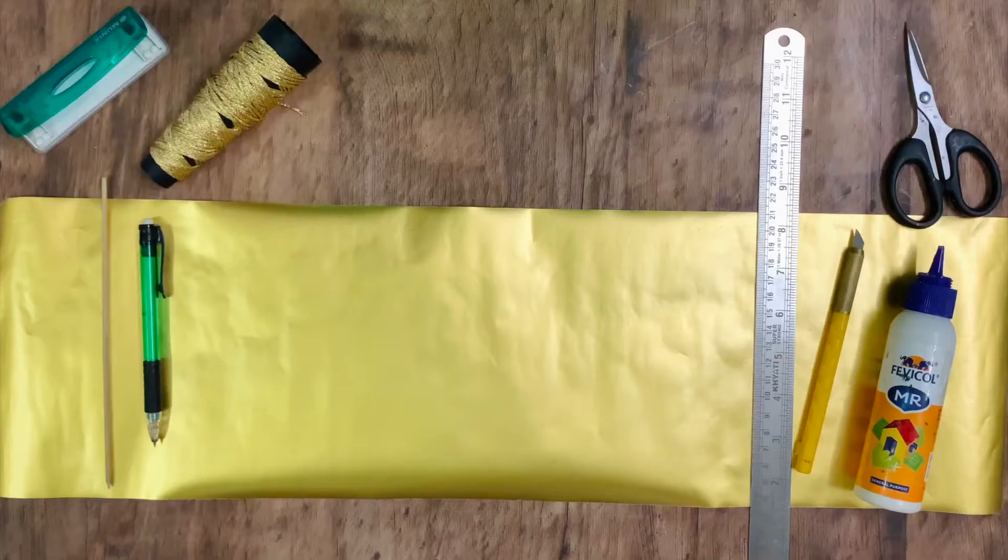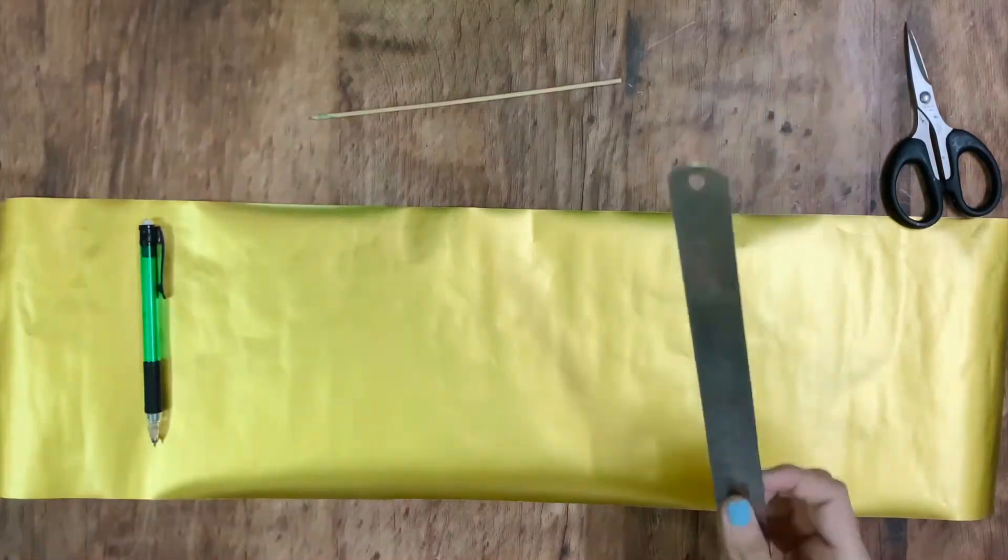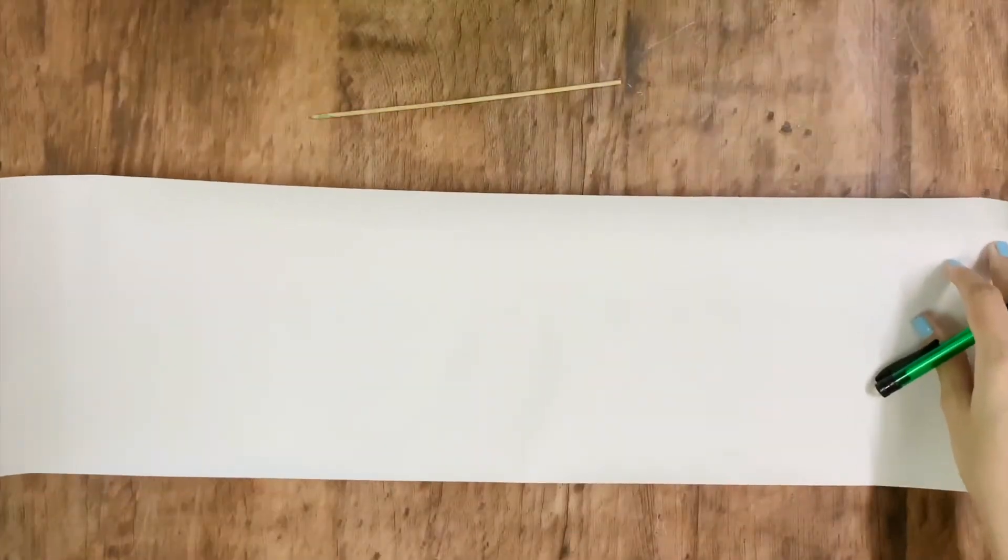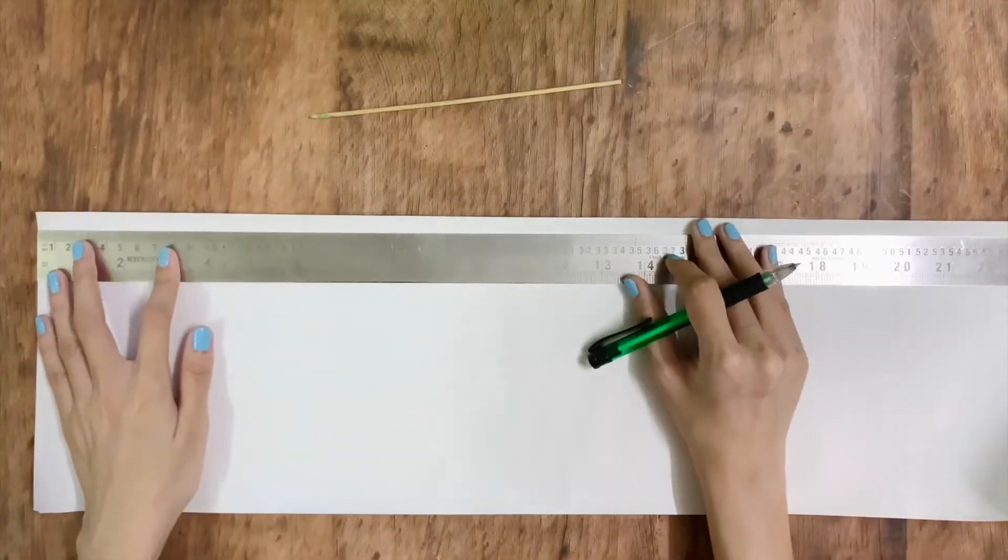It is difficult to have such a long strip of paper, so you can join two, three, four, or even five strips of paper together to make it long enough. I am going to be joining two strips of 18 by 60 centimeter paper together.